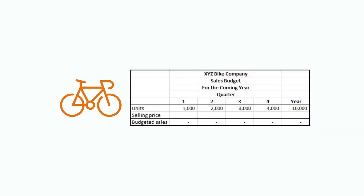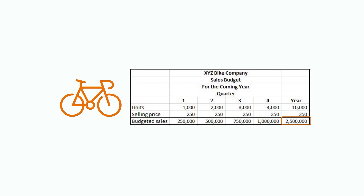Using the formula: expected units times unit selling price equals budgeted sales dollars. Here, XYZ Bike Company is planning to sell 1,000 bicycles in the first quarter of the upcoming year, and as a result of growth, they're planning to sell an additional 1,000 units each quarter after that. This works out to 10,000 bicycles for the year. The number of bicycles is then multiplied by the expected selling price of $250 per bicycle, which results in total budgeted sales or revenue for each quarter, totaling $2.5 million for the year. The company now knows how many units they're planning to sell each quarter and the expected revenue they plan to generate.